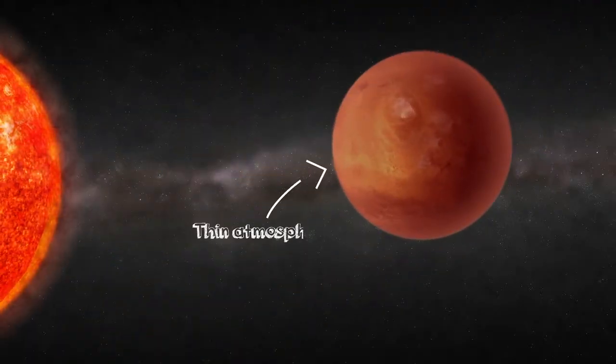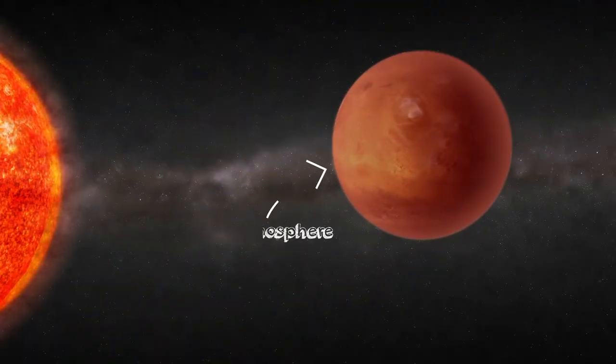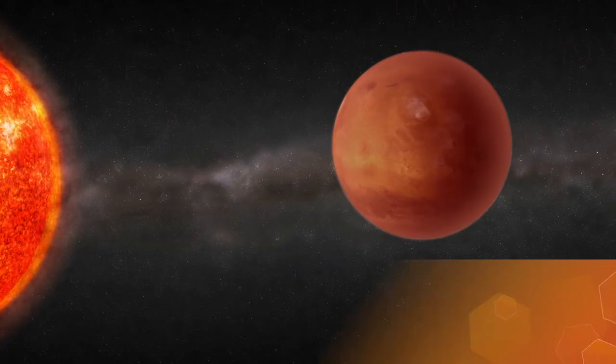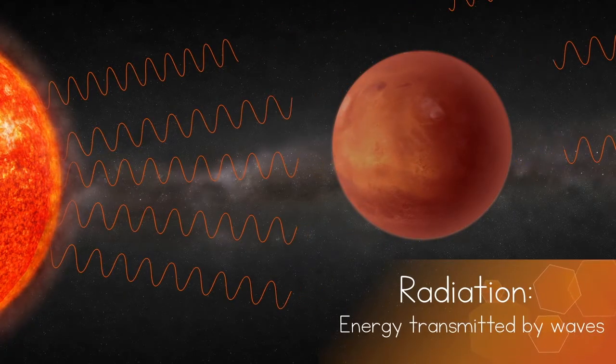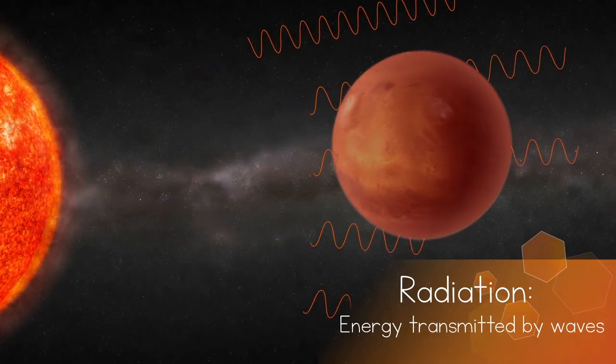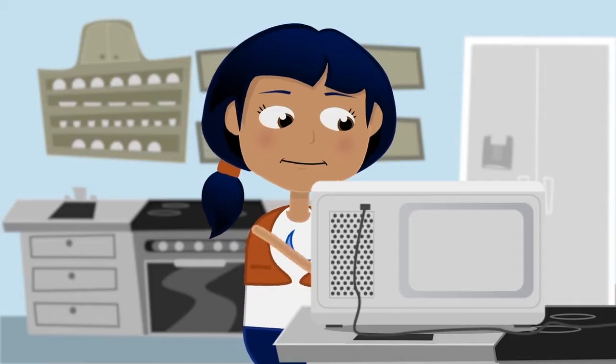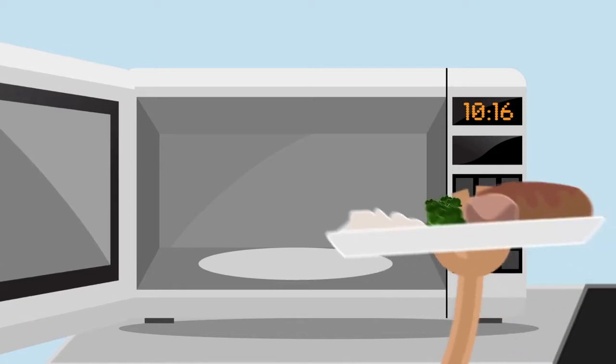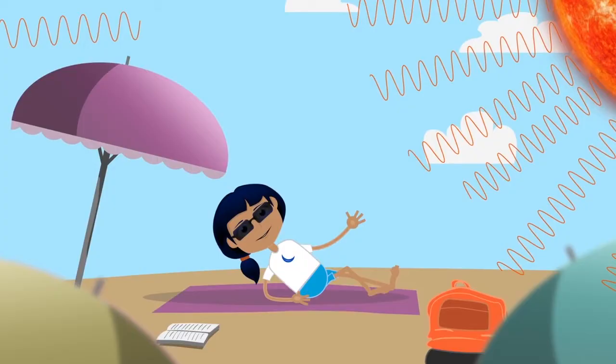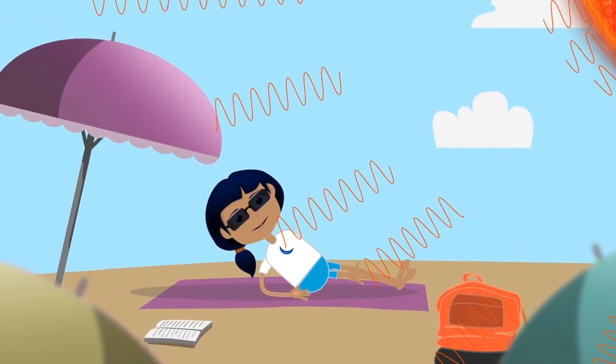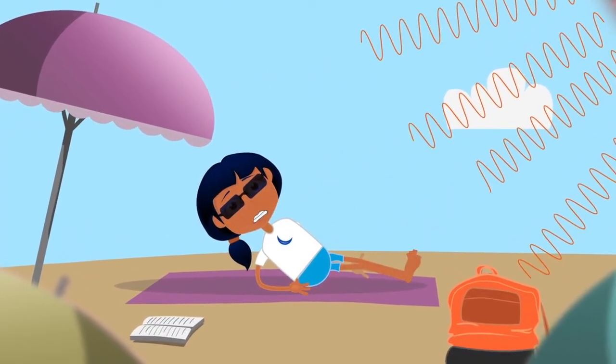Since Mars has such a thin atmosphere, there is also little protection from the sun's radiation. Radiation is energy transmitted by waves. The warmth you feel from the sun, that's radiation. When your food heats up in the microwave, that's radiation too. As you might know from going outside on a sunny day without sunscreen, too much of it can be a very bad thing.